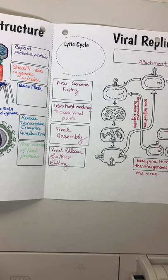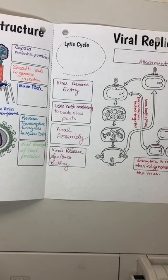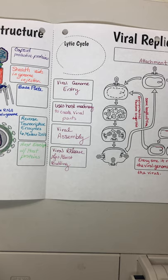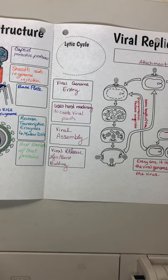The other type of release is budding, which we saw before as exocytosis. The virus is slowly released through the membrane, and the host membrane surrounds the virus so that it now has an envelope. Next time it bumps into a host cell, that cell recognizes the host membrane and lets it in. Budding is slower, but the cell can live longer to produce more and more virus.